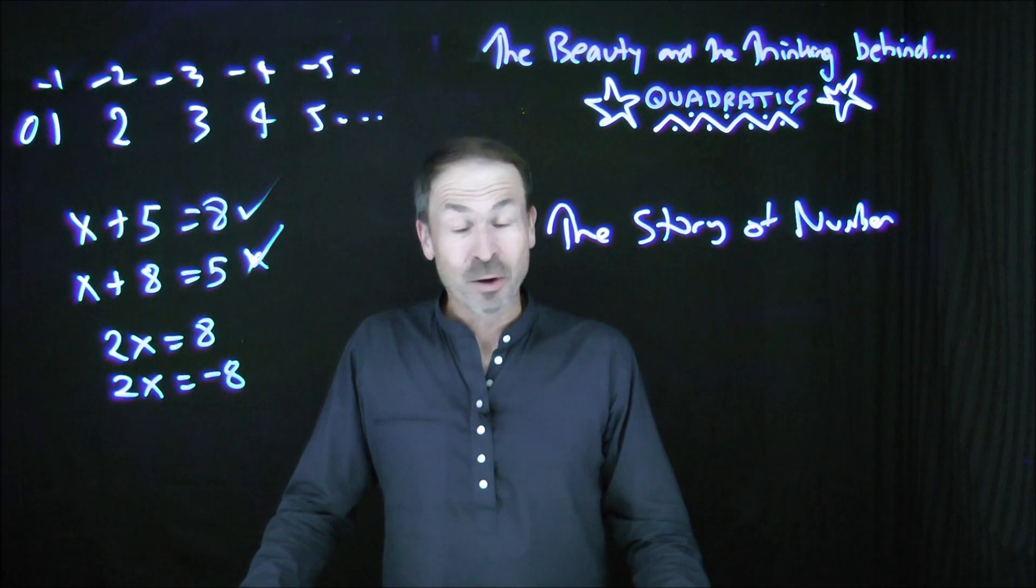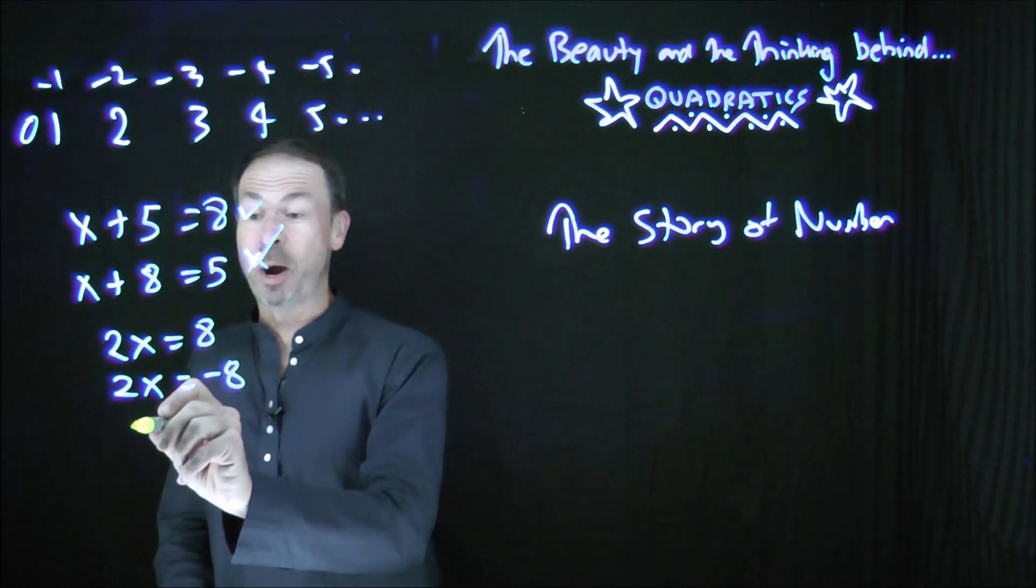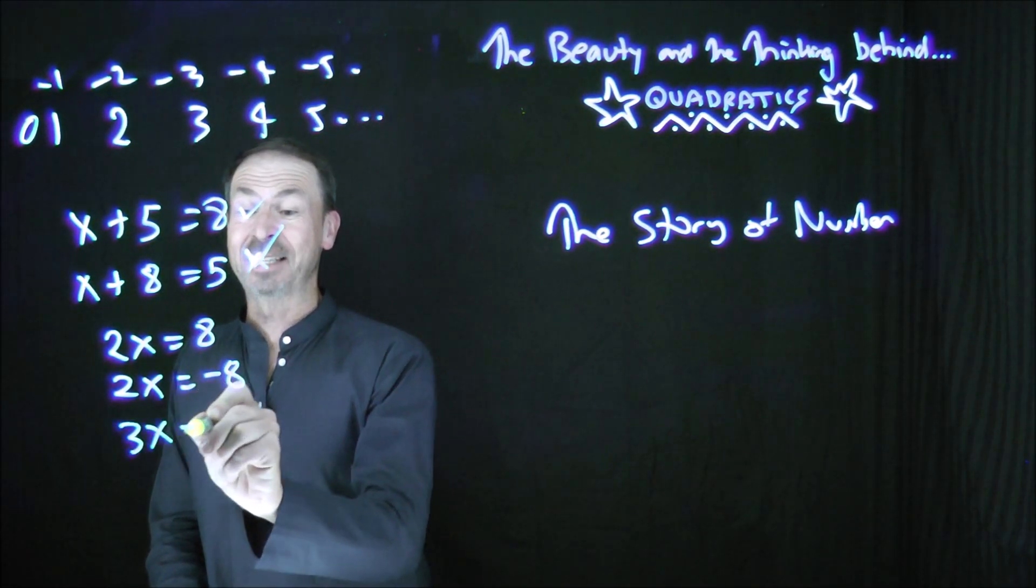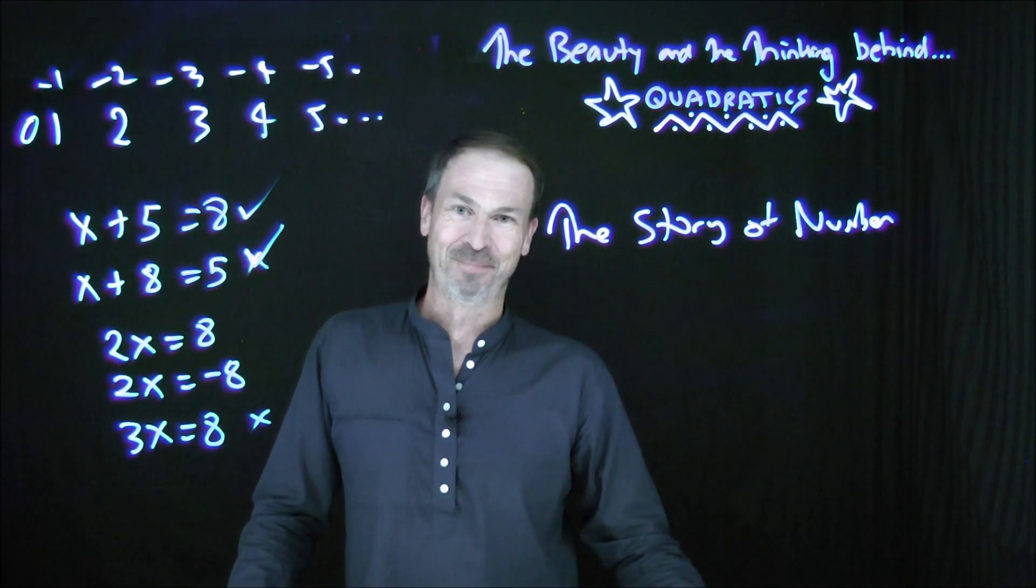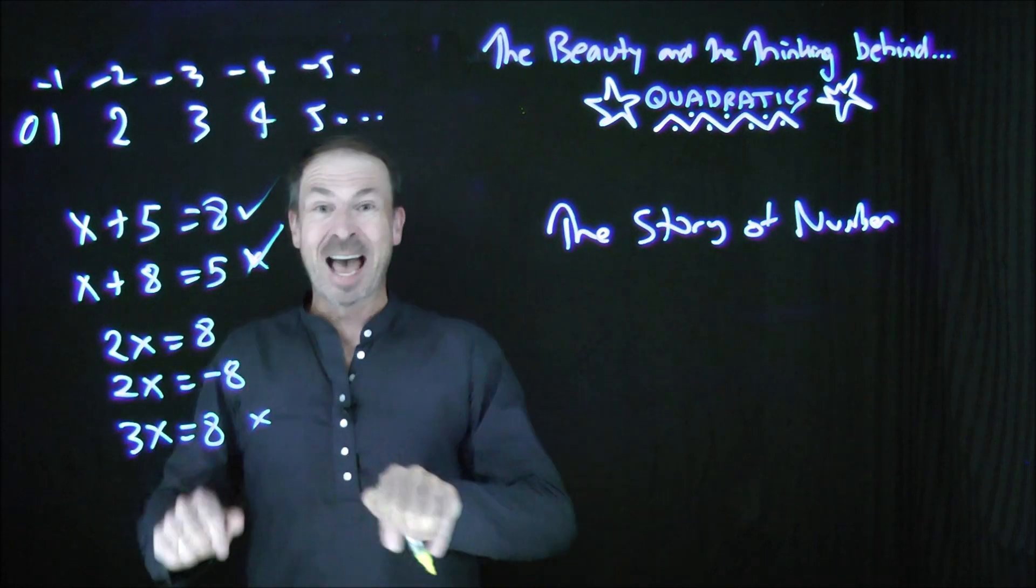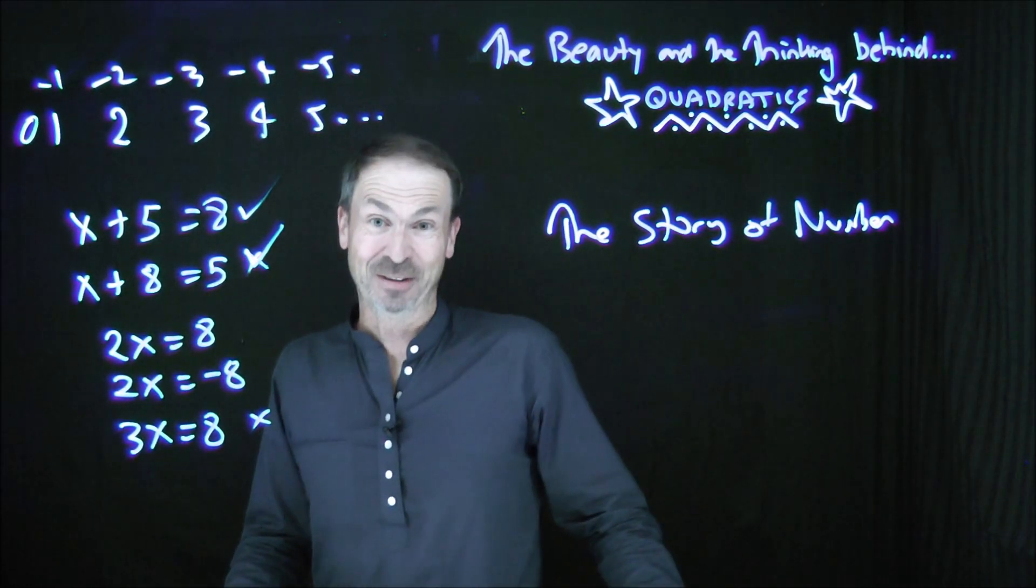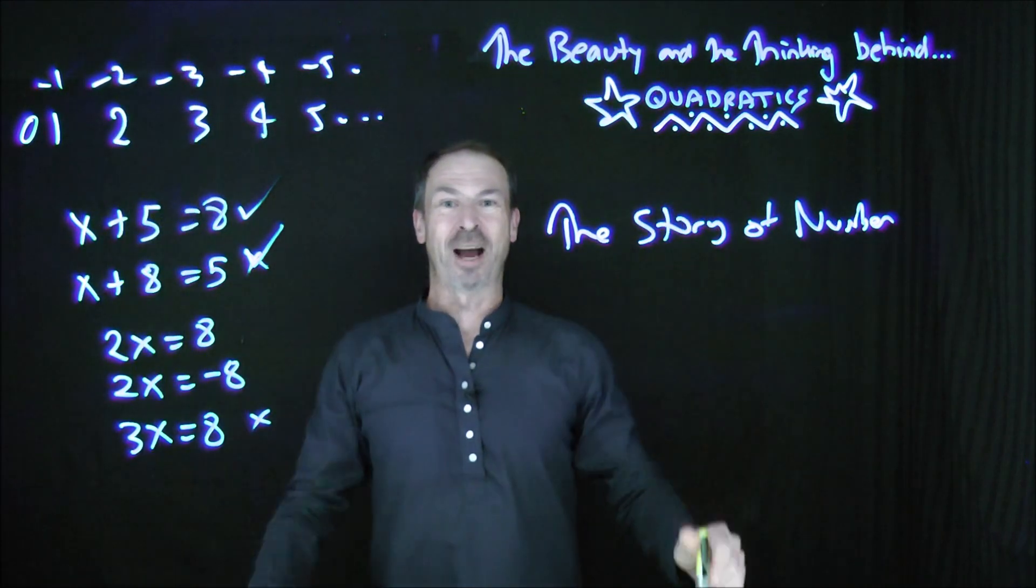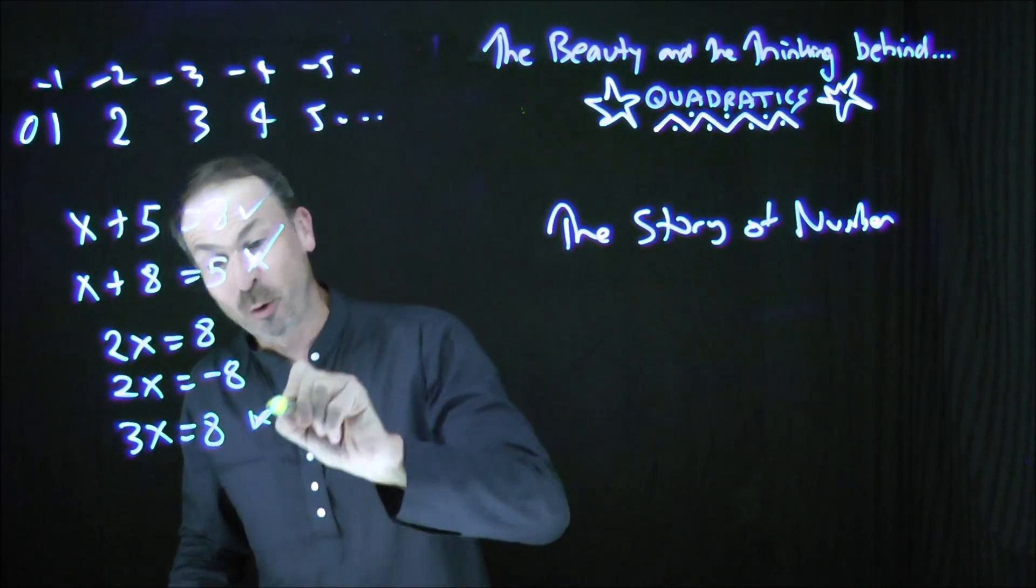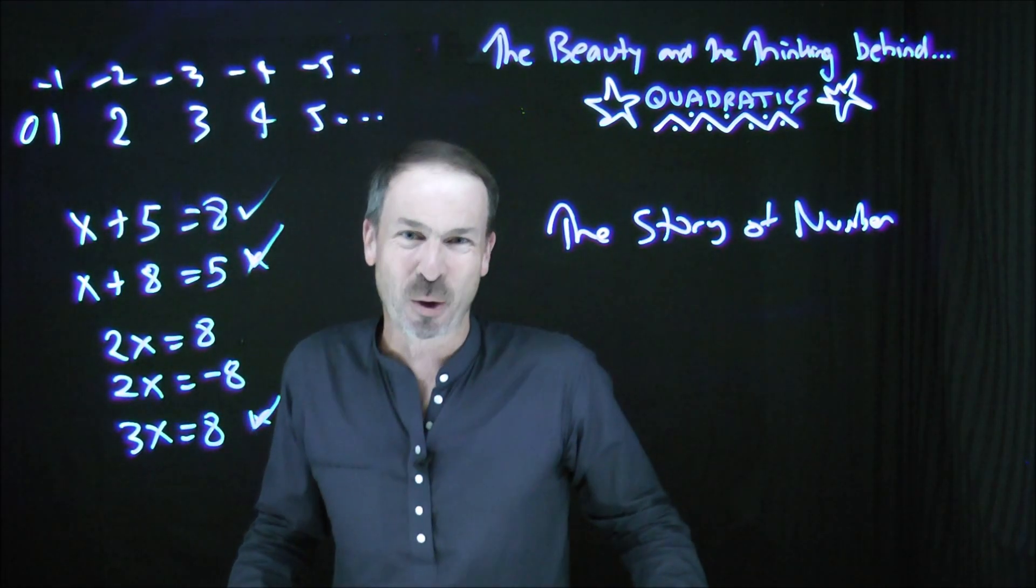The integers are good for solving all sorts of equations. I can even solve something like 2x = 8, or 2x = -8, that's fine. But the integers are also deficient, because if I gave you the equation, say, 3x = 8, we're in trouble. Can't do that one. So we invent a new type of number to help solve equations like that, and we call them fractions. So we've gone from the counting numbers, to the integers, and now to the set of all fractions. And the fractions are great, now we can solve equations like that and all sorts of other wonderful equations.